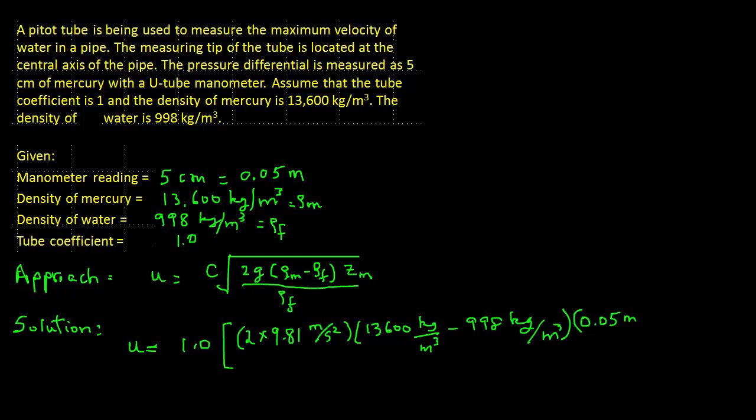And for water is 998 kilograms per cubic meter. Zm is 0.05 meters. And that's divided by the density of water, the fluid, which is 998 kilograms per cubic meter.